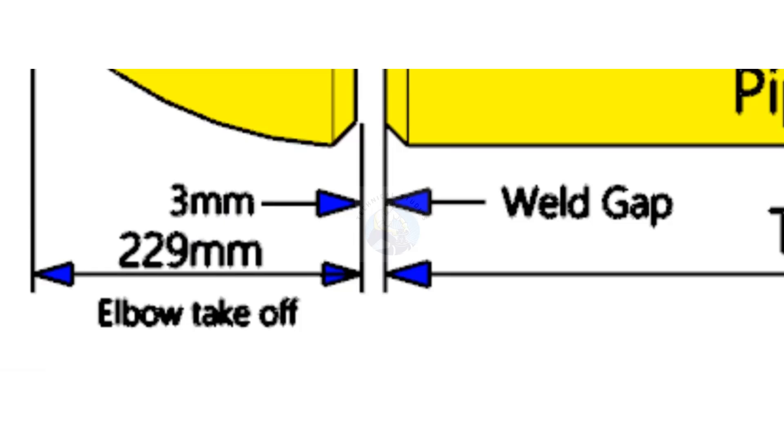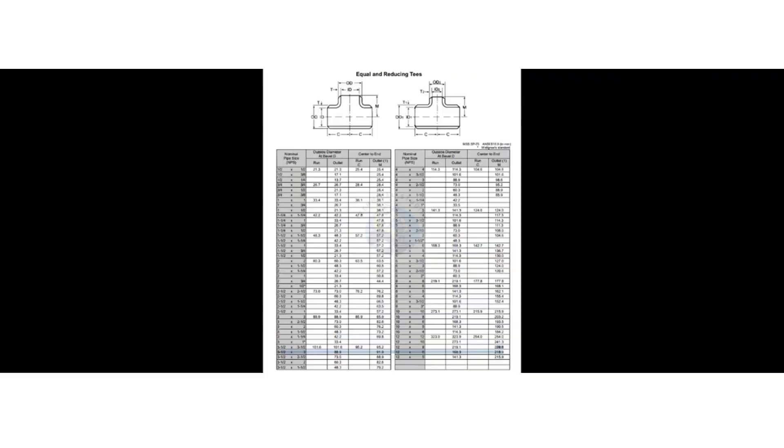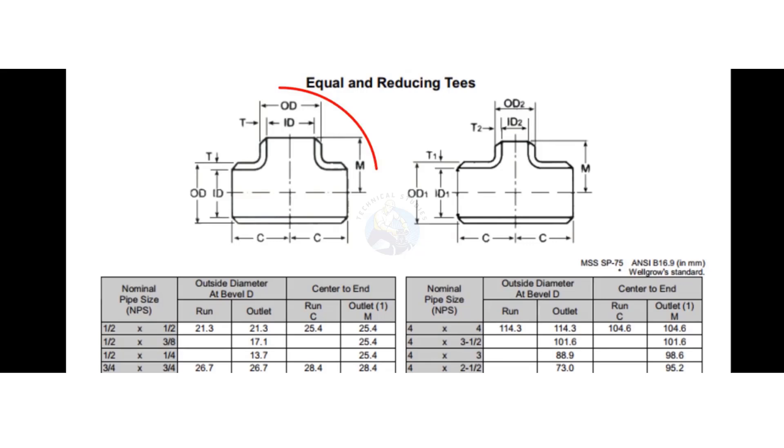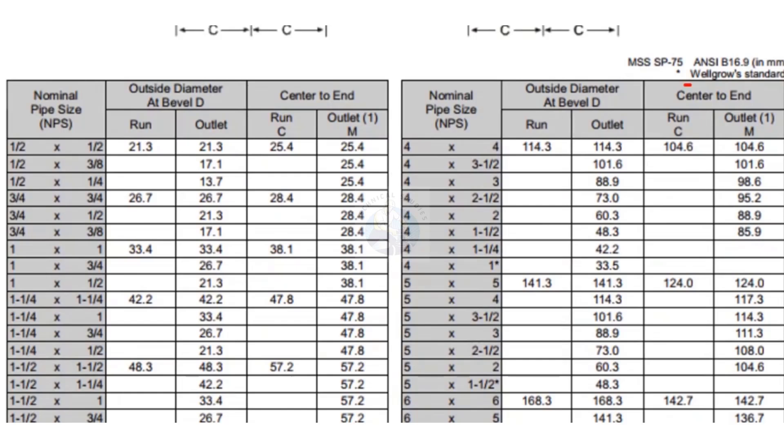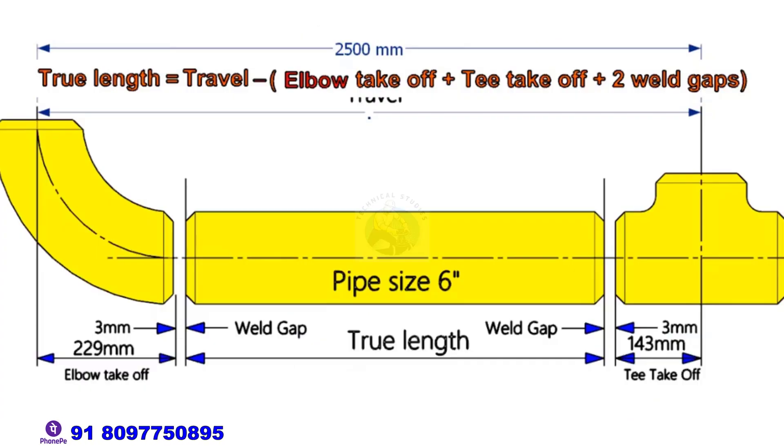Let us check the takeoff length of the tee in the chart. In the equal tee section, check the dimension of six inches in column C. 142.7, let us take it as 143 millimeters.